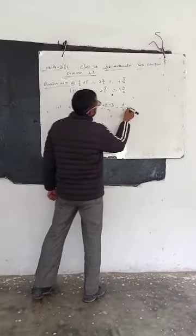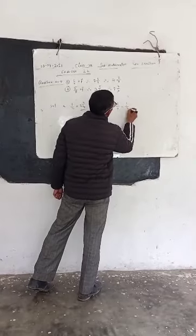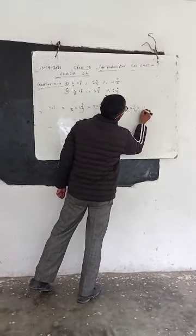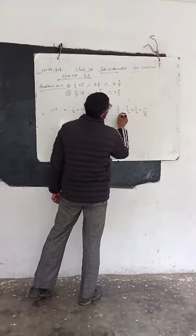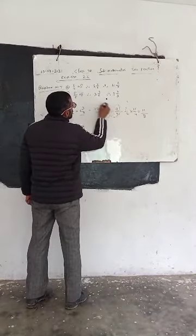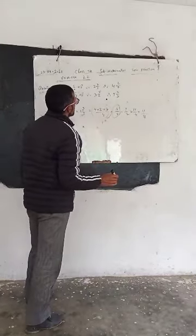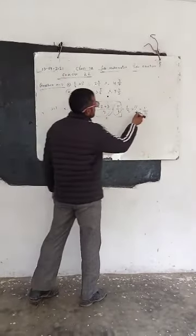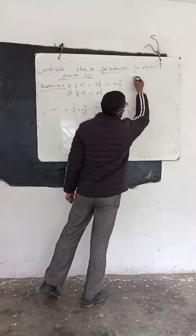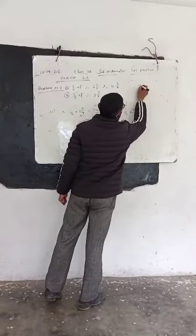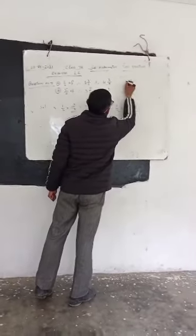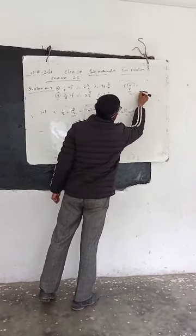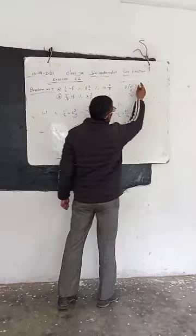Now we will do 1 half of 11 divided by 4. We multiply: 1 times 11 is 11, and 1 times 4 times 2 is 8. So we get 11 divided by 8. Now we will change the mixed fraction into a proper fraction, dividing to get the result.